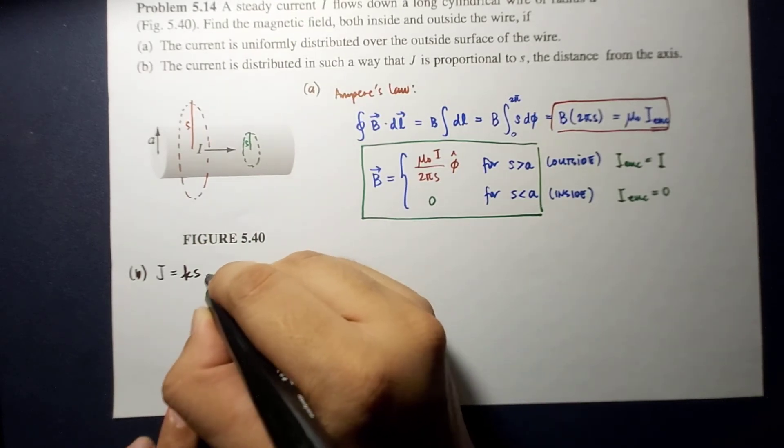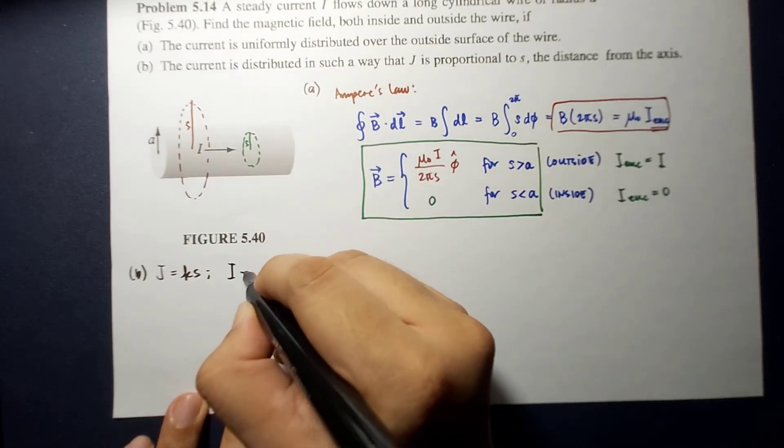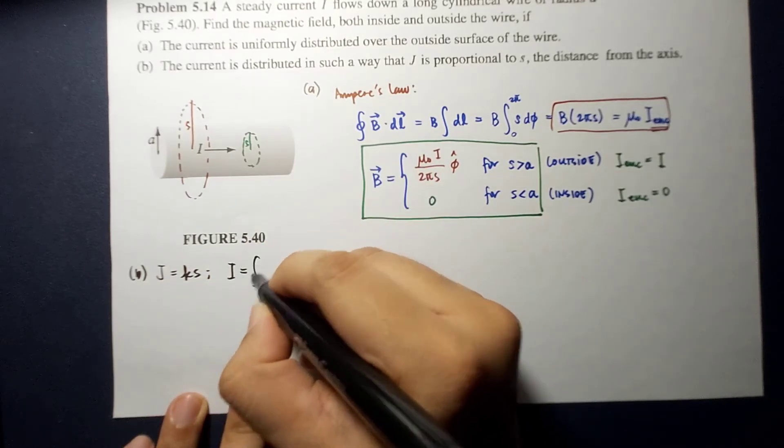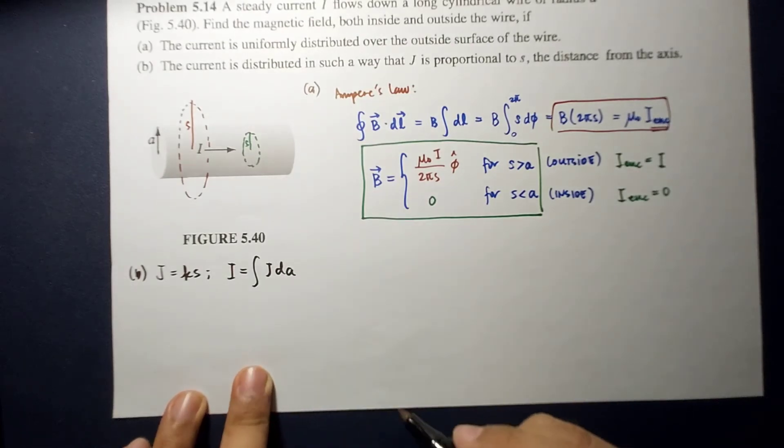So, we know that we need this to calculate the current. Current is J dA, the integral.